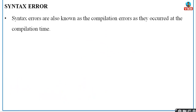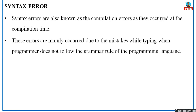What is a syntax error? Syntax errors are also known as compilation errors, as they occur at the time of compilation. The errors which occur during compilation are nothing but your syntax errors. These errors mainly occur due to mistakes while typing, when the programmer doesn't follow the grammar rules of the programming language — for example, forgetting to keep a semicolon at the end of a statement, or forgetting to declare a variable before using it.